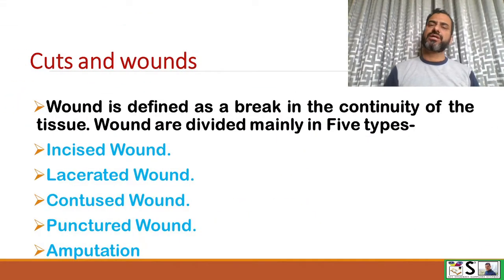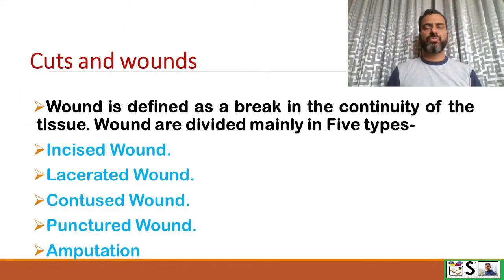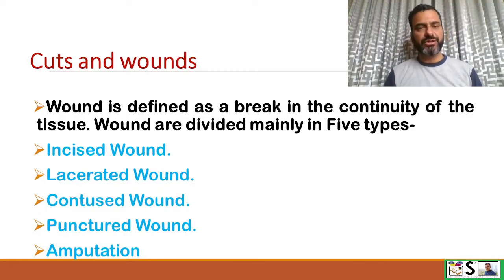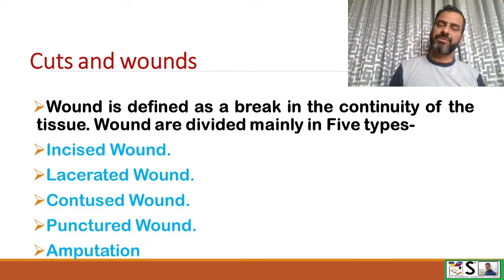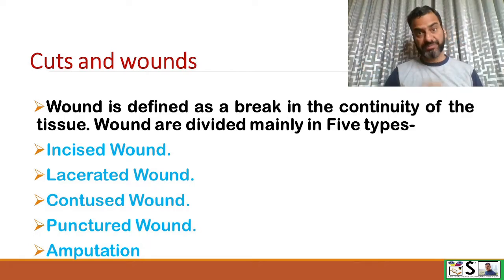What are cuts and wounds? A wound is defined as a break in the continuity of the tissue. Wounds are divided mainly into five types.